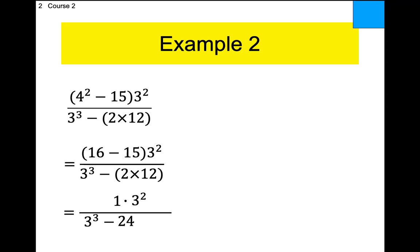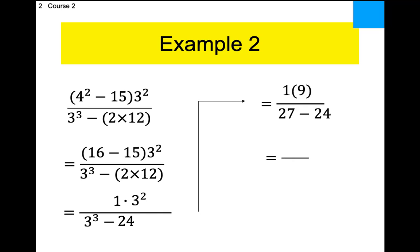So 16 minus 15 is 1. Three squared is 9. Three to the third was 27. One times 9 is 9. 27 minus 24 is 3. This big ugly expression is actually the number 3. Imagine that. This is what's called a math teacher problem — where you start with a big mess and the answer ends up being like 1, 2, or 3.